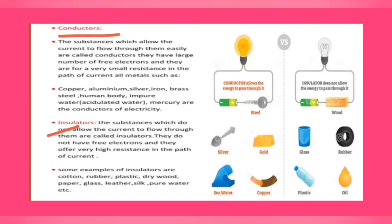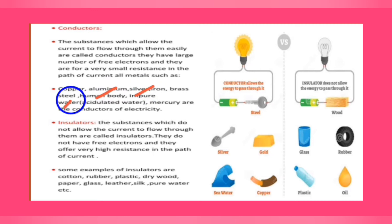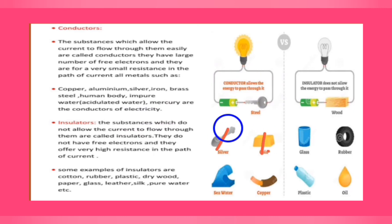Conductors are substances which allow current to flow through them easily. They have a large number of free electrons and very small resistance. Examples of good conductors include copper, aluminium, silver, iron, brass, steel, gold, mercury, sea water, human body, and acidulated water.